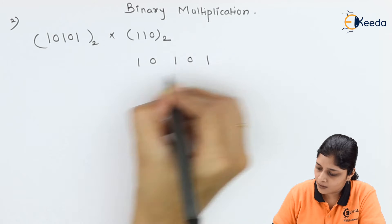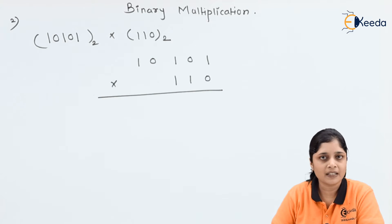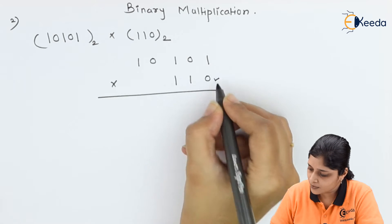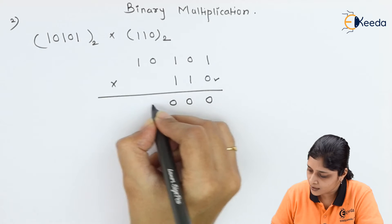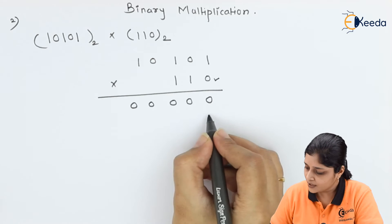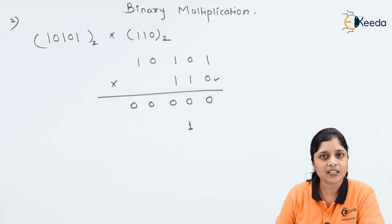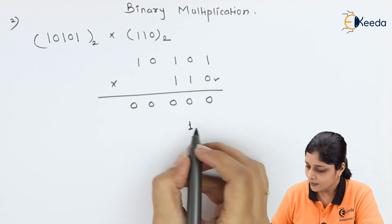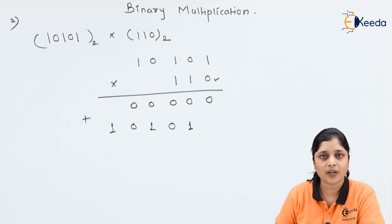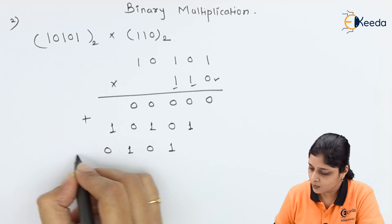Write 10101 multiplied by 110, and perform the binary additions considering each term. First, consider the 0 term — write 0 for all terms, because 0 multiplied by any number is 0. Then leave one place vacant, and for multiplication by 1, anything multiplied by 1 is the same: write 1 0 1 0 1. For the third term, write 1 0 1 0 1 again.